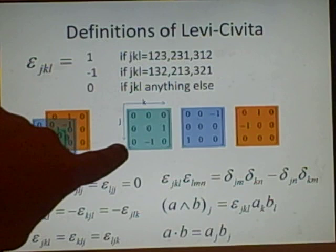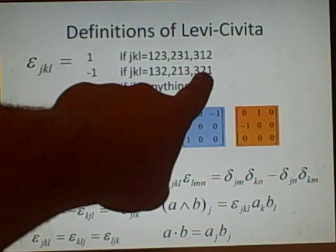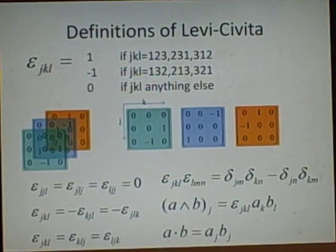So if we have j is 3, k is 2, and l is 1, 321, we'll get minus 1. And that's how that works.